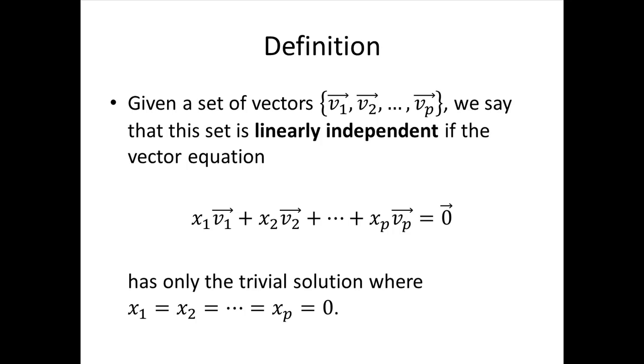So given a set of vectors v1, v2, and so on, which might be coming from the columns of a matrix but might be coming from somewhere else, we say that that set is linearly independent if the vector equation has only the trivial solution where the x's all equal 0.